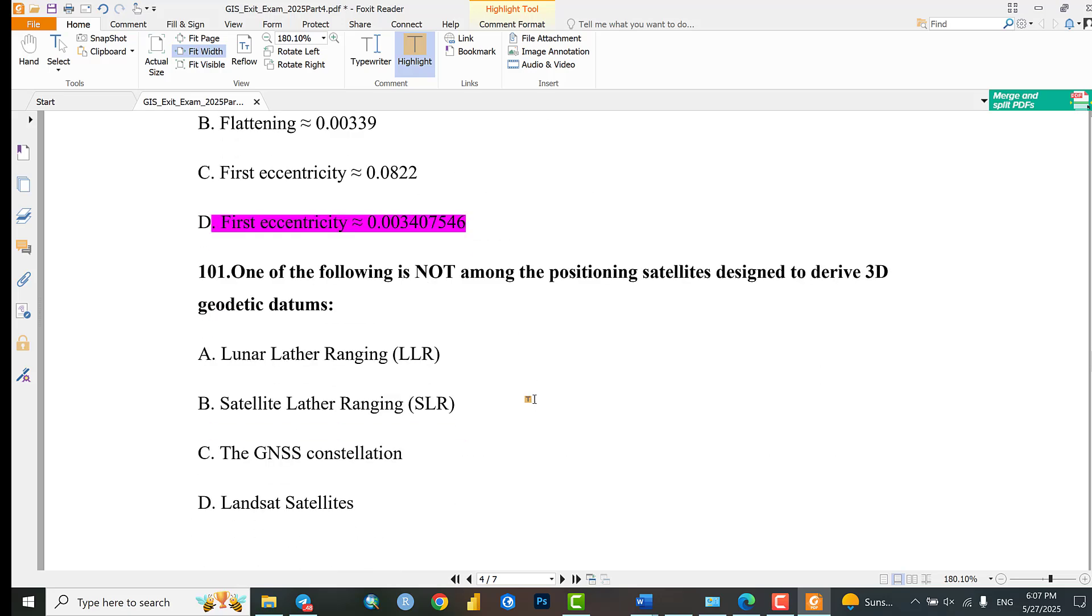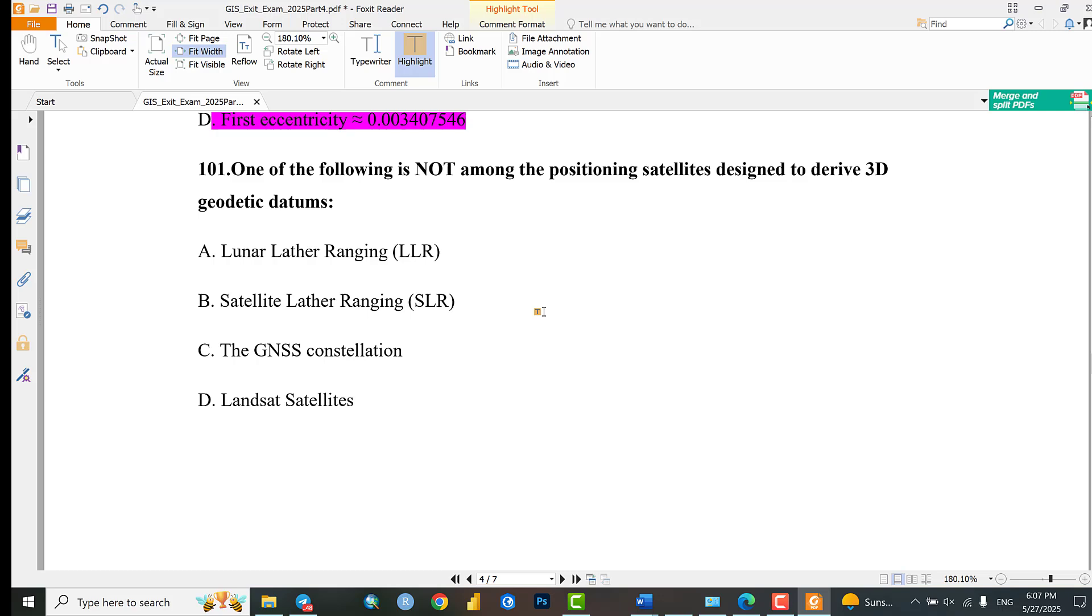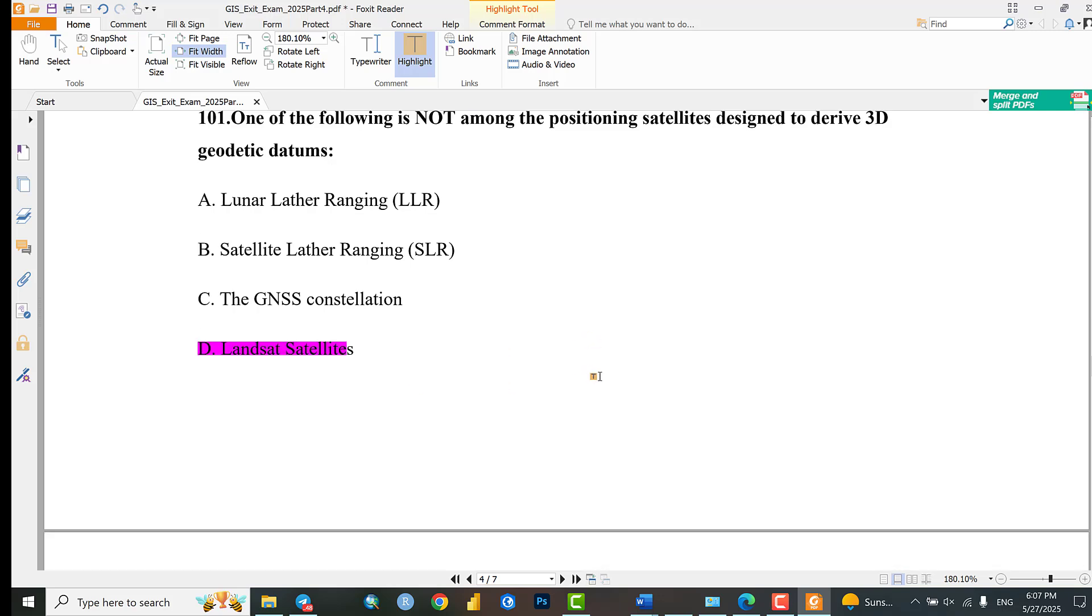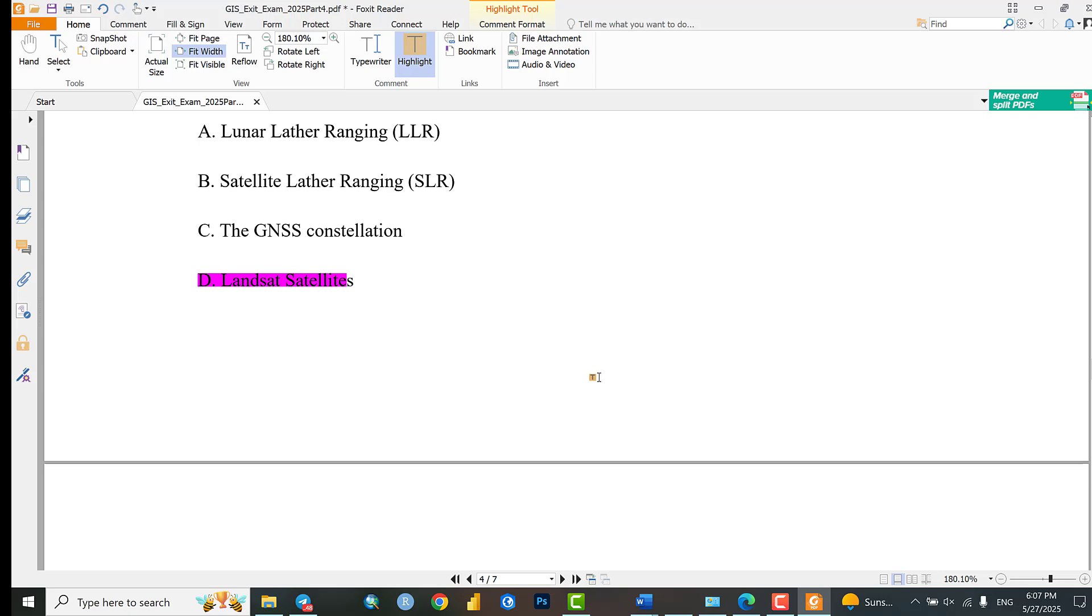Question 101: Which one of the following is not among the positioning satellites designed to derive 3D geodetic data? Options include lunar laser ranging satellite, laser ranging, GNSS constellation, and such satellites. The Landsat satellites are not responsible for positioning satellites for 3D analysis or 3D geodetic data.